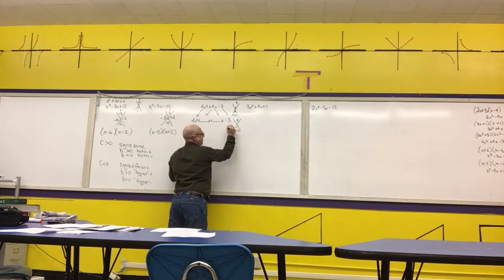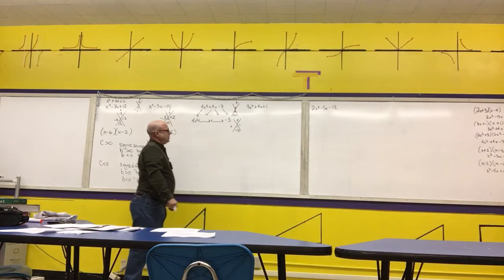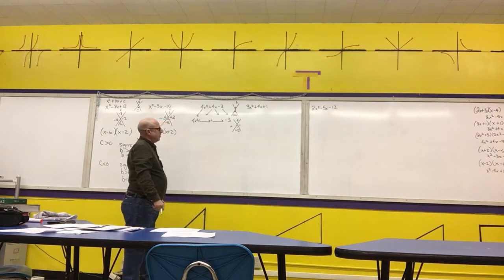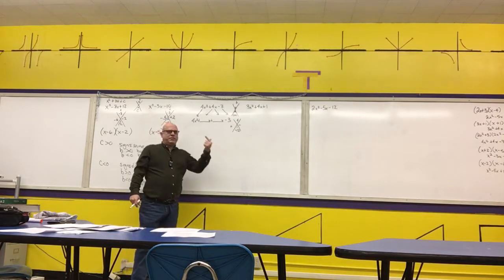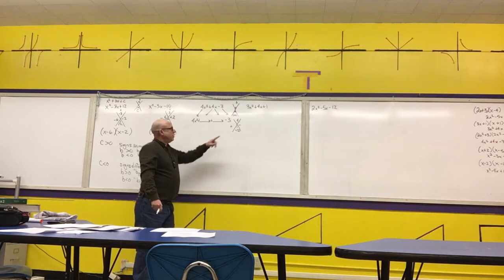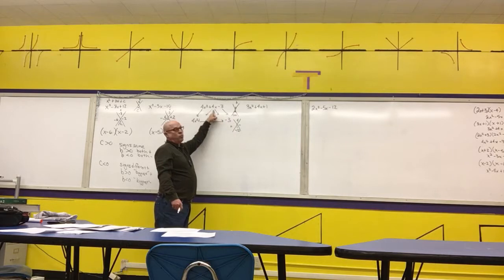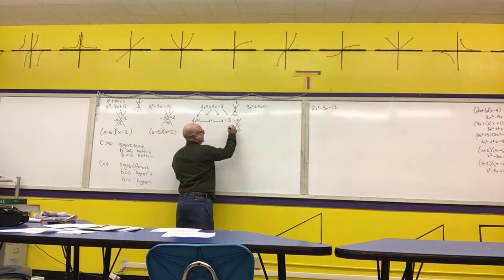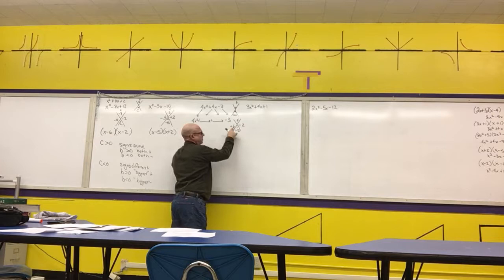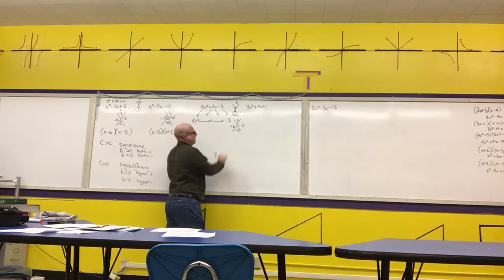Since the product is negative, we need opposite signs. Since b is positive, the largest absolute value number must be positive. Our factor pairs to consider are 1 and 12, 3 and 4, or 6 and 2. Let's try plus 6 and minus 2: 6 minus 2 is 4, and 6 times negative 2 is negative 12. That works.